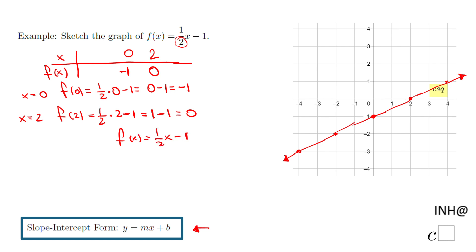1 can be graphed by using the slope, which is 1/2, and the y-intercept, which is (0, -1). And you can see that in the picture. Yes, I'm